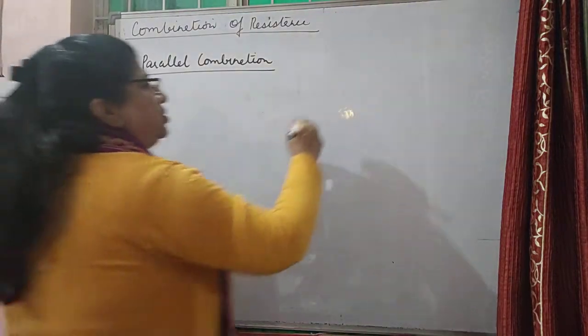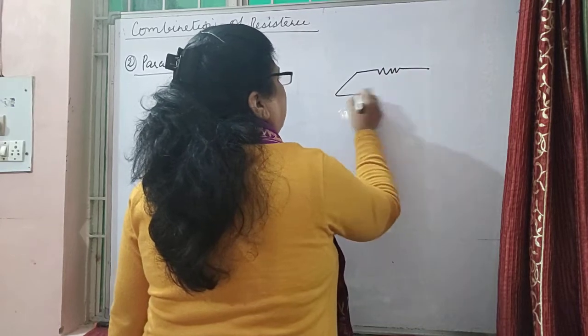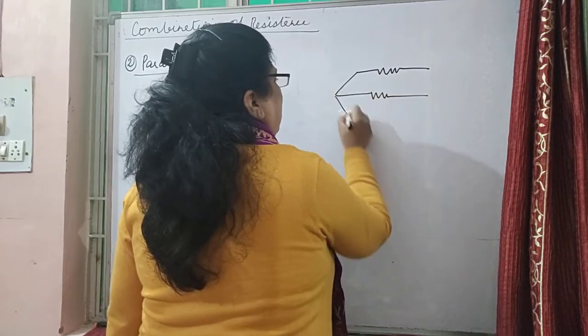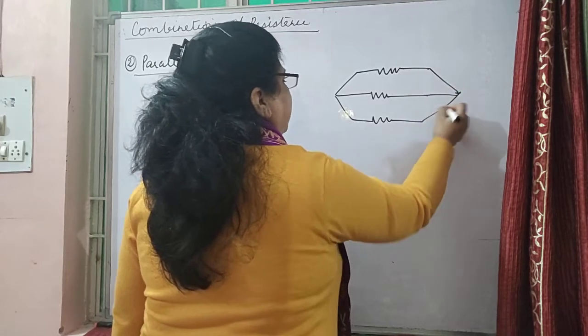Now, we are having a parallel combination. Again, we are going to consider three of them: one, two, and three. And for n numbers, we take n times.